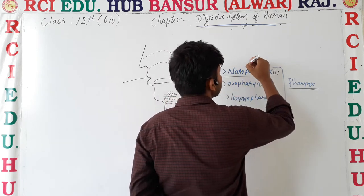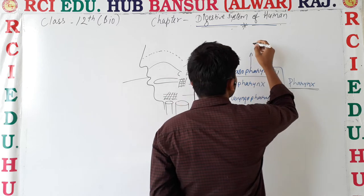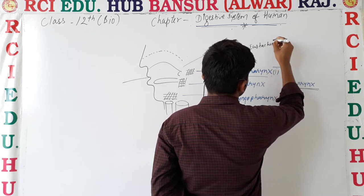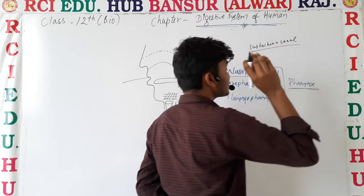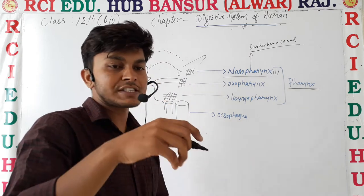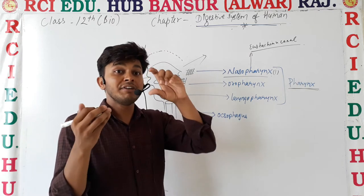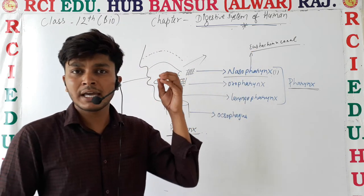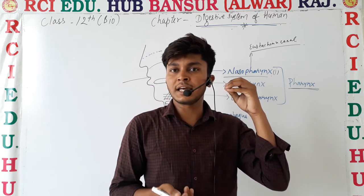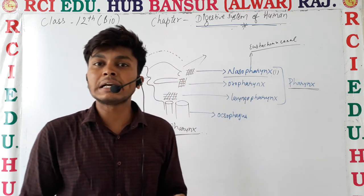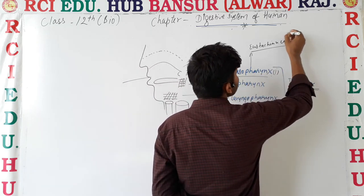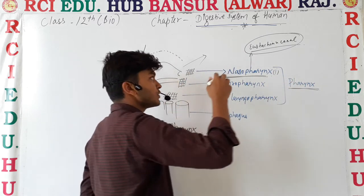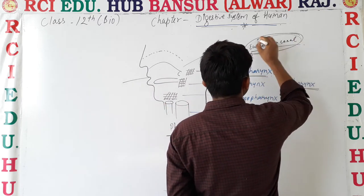The nasopharynx has one opening which is called the eustachian canal. The eustachian canal is connected to the ear. This is the opening of the ear into the nasopharynx. You may have noticed that when we put an ear drop in the ear, after some time you can taste it in the mouth — that is because the ear opening, the eustachian canal, is opened into the nasopharynx.